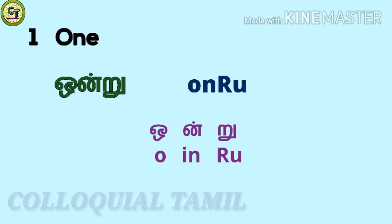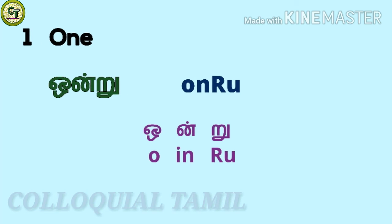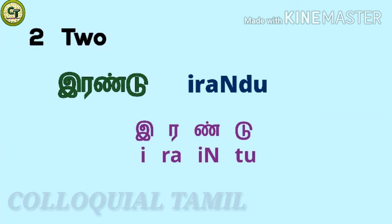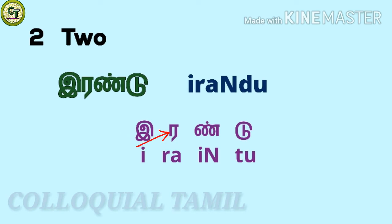For one: 'onru'. O (a short vowel), n with a consonant, ru (a short letter) together: onru. For two: 'erandu'. E (a short vowel), r, a short letter, n with a consonant, a short letter together: erandu.